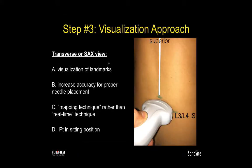The third step is the scanning technique utilized for visualization or approach. The transverse scan, or short axis view, is one type of technique. In this scan, the probe is laid in a horizontal plane to the midline, demonstrated by the white line here. This is utilized for visualization of landmarks and can increase the accuracy for proper needle placement, not only guiding you to an interspinous space but also giving you an idea of needle direction based upon the angle of the beam. It is a mapping technique rather than a real-time technique, generating optimal landmarks to help find interspinous spaces.